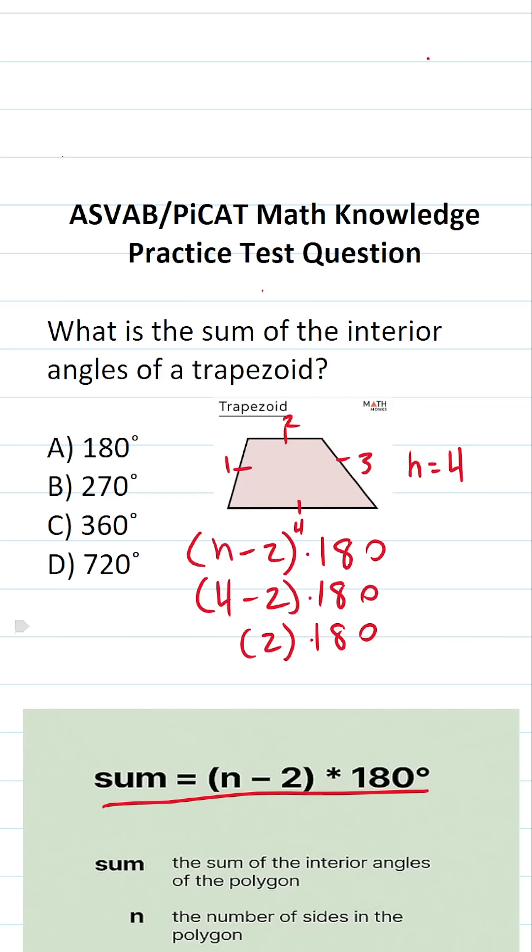If you can't do that mentally, you could always do it off to the side. We have 180 times 2. 2 times 0 is 0. 8 times 2 is 16. Carry a 1. 2 times 1 is 2 plus 1 is 3.